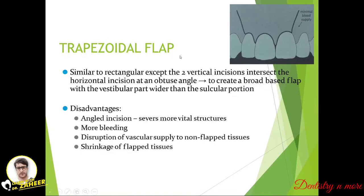The trapezoidal flap is almost similar to rectangular except the two vertical incisions intersect the horizontal incision at an obtuse angle to create a broad-based flap with the vestibular part wider than the cervical part. Instead of going straight, the incisions angle outward slightly. The disadvantages are that the angled incision encounters more vital structures, with chances of bleeding, disruption of vascular supply to non-flap tissues, and shrinkage of flap tissues.